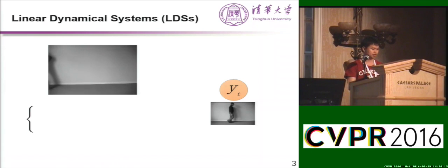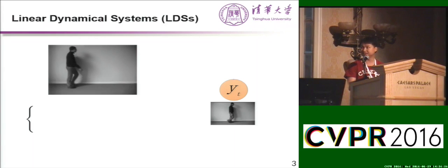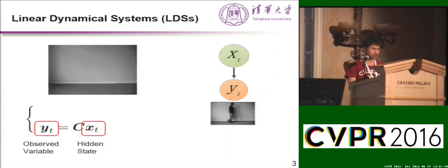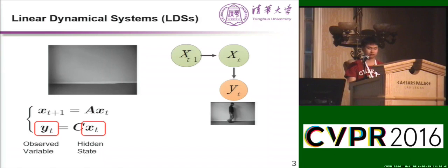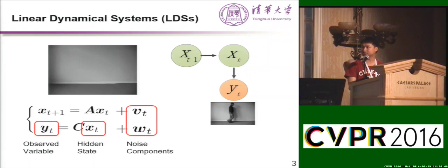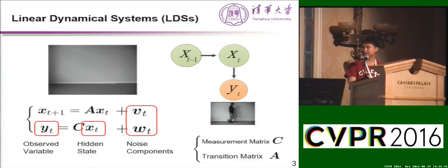Here is how I can model the time series. Suppose I am given a video and the observation variable could be the frame from the video. For each frame, Yt is generated by some low-dimensional hidden state Xt. And Xt follows a Markov assumption that Xt is generated by its previous state Xt-1. I also have the noise components. This is the LDS model.